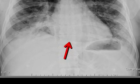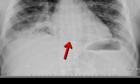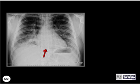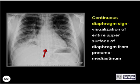The red arrow is pointing to what sign here? This is the continuous diaphragm sign, which is the visualization of the entire upper surface of the diaphragm from a pneumomediastinum.